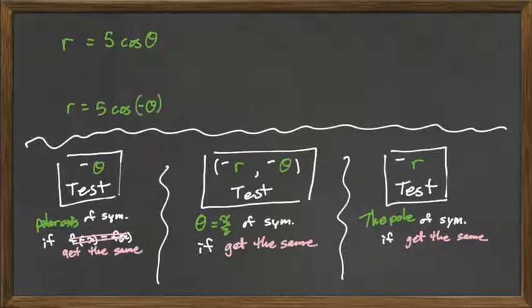When you plug a negative theta into cosine, what happens? You guys know what happens? Cosine doesn't care what you plug into them. You get the same thing. So this equals, yeah, it's loose. So we get the same thing. Did we get the same thing? Is there symmetry? Yes. So there's symmetry about the polar axis.